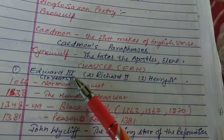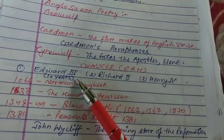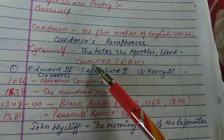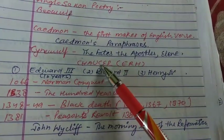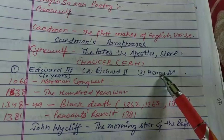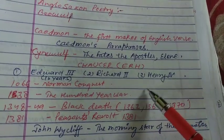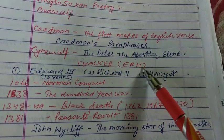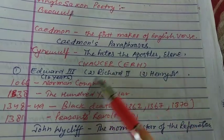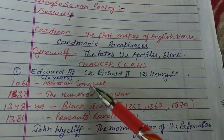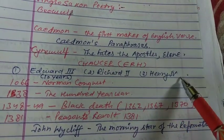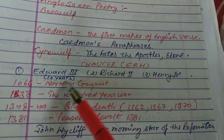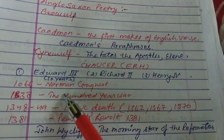Coming to Chaucer's age — Chaucer worked during the reign of three kings. If you want to remember them by shortcut, use the letters E, R, H: Edward the Third, Richard the Second, and Henry the Fourth. Remember them in this way. Edward the Third ruled for about ten years in this context.